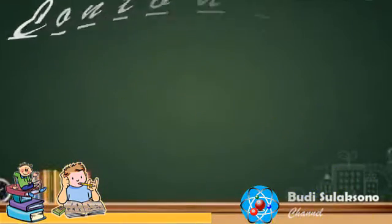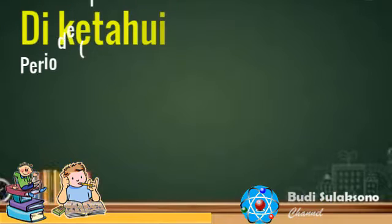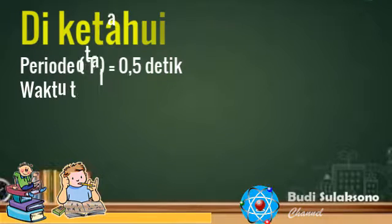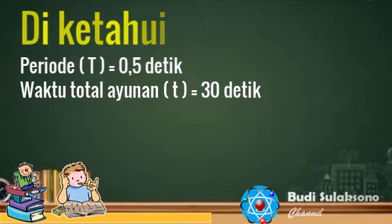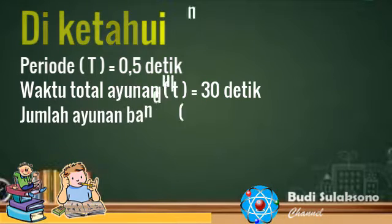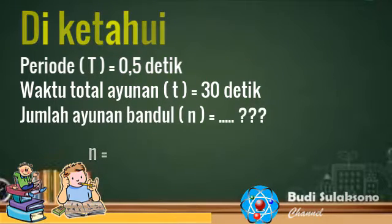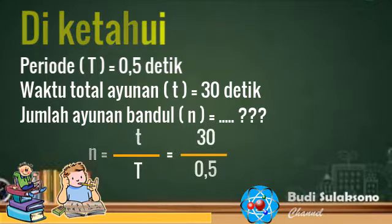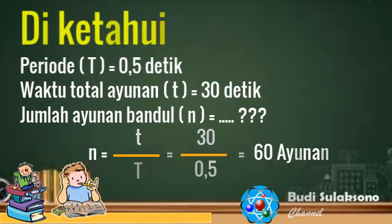Dari soal tersebut, diketahui bahwa periode atau T besar sama dengan 0,5 detik, dan waktu total ayunan bandul atau T kecil sama dengan 30 detik. Untuk menghitung jumlah ayunan bandul atau N, kita menggunakan rumus N sama dengan T kecil per T besar. Sehingga N sama dengan 30 per 0,5, sehingga diperoleh nilai N sama dengan 60 ayunan.